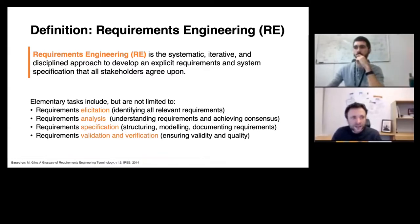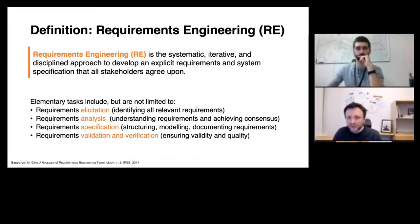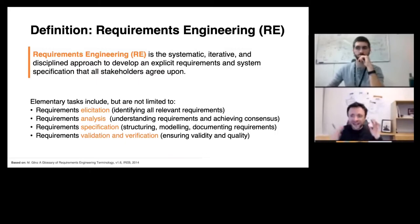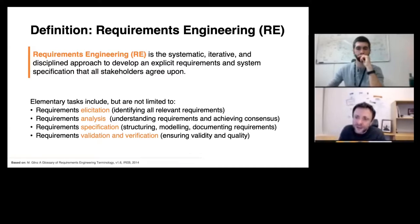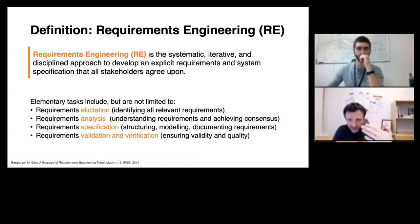What is requirements engineering? The definition we're using in this course is that requirements engineering is the systematic, iterative, and disciplined approach to develop an explicit requirements and system specification that all stakeholders agree upon. There are a couple of things in this definition worth mentioning. The last part is that all stakeholders agree upon. Requirements engineering is a lot about finding consensus, about resolving conflicts and putting everyone in this system development project on track.